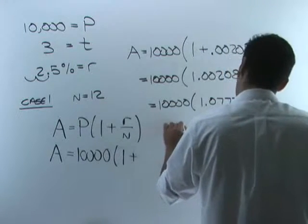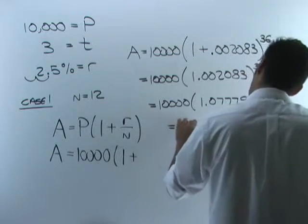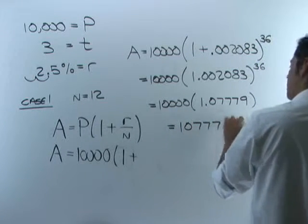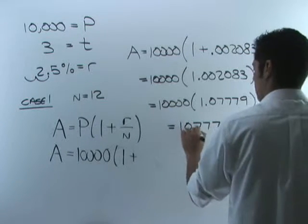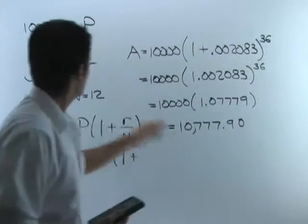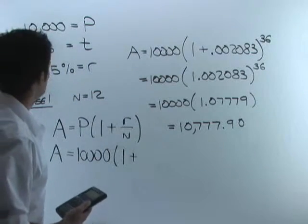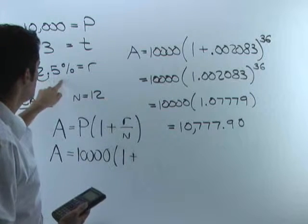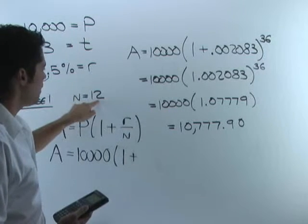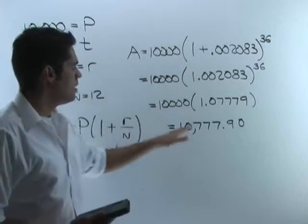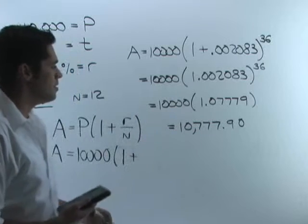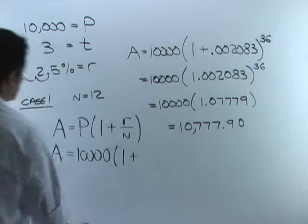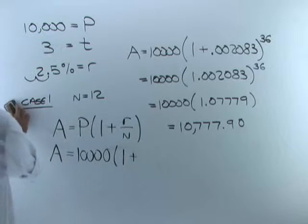Taking 1.002083 to the 36th power gives 1.07779. Multiplying 10,000 times 1.07779 — that just moves the decimal point — comes out to $10,777 and 90 cents. So if you invest $10,000 for three years at 2.5% interest compounded monthly, after three years you'll have $10,777.90.